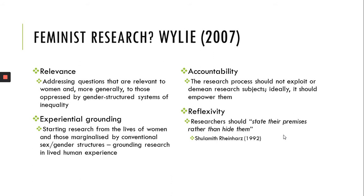Experiential grounding suggests that ideas for research — what to research in the first place, what to put in a grant application — should stem from the lived, real-life experiences of women, and if third wave, of these other groups as well. What it is actually like to be a woman or a member of these other groups, with the aim of empowerment and emancipation, reflecting real life experiences of downtrodden groups rather than theoretical, abstract, airy-fairy notions.